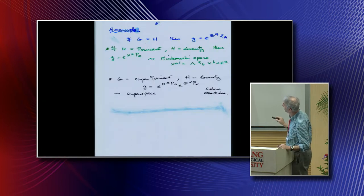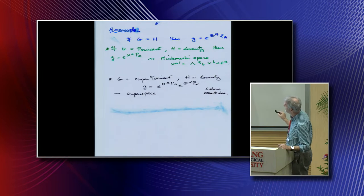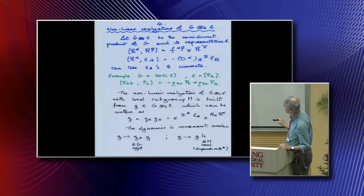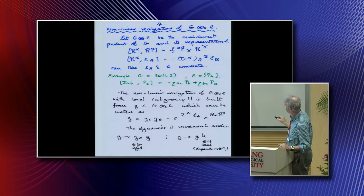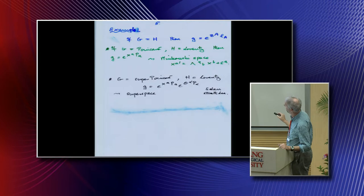Let's do some examples. If we take G equals H, because this is an element of G and this is an element of G too, I can get rid of all these guys. In that case you're only left with the coordinates.